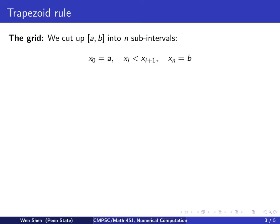This is called the trapezoid rule. Let's first define the grid. The interval [a, b] is cut into n subintervals, and we denote the grid points as x_0, x_1, x_2, all the way to x_n. x_0 is a, x_n is b, and in between these are sorted, so x_i is less than x_{i+1}.